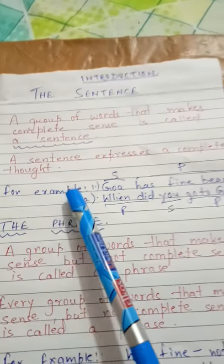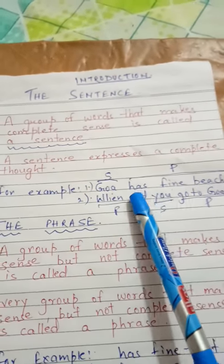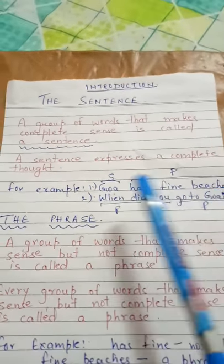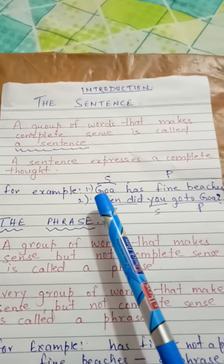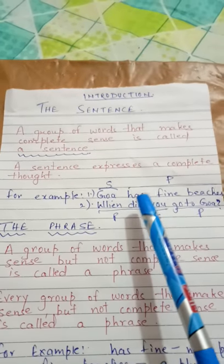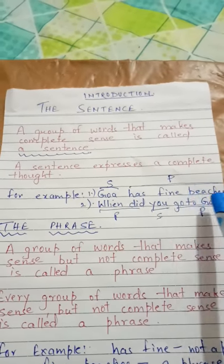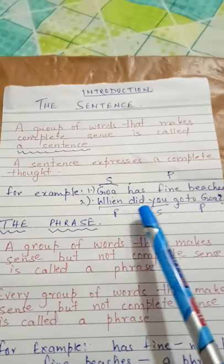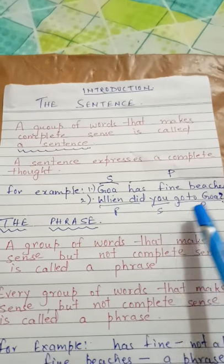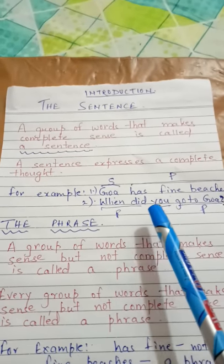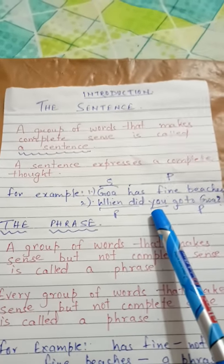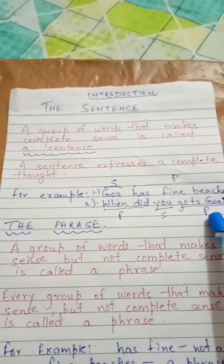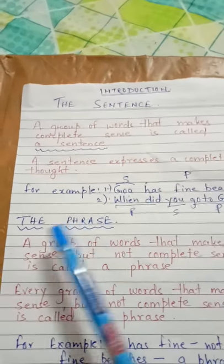For example: 'Goa has fine beaches.' Here, 'Goa' is the subject and 'has fine beaches' is the predicate. Another example: 'When did you go to Goa?' Here, 'you' is the subject and 'when did you go to Goa' is the predicate.